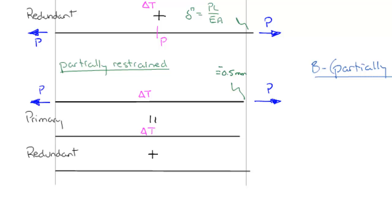We have a delta T. That delta T results in displacement 1, which equals alpha delta T L.